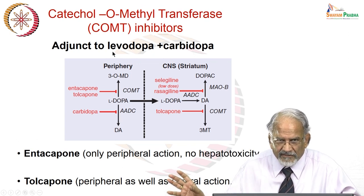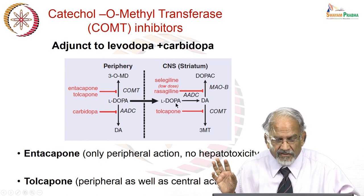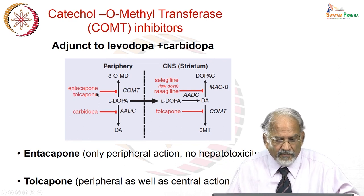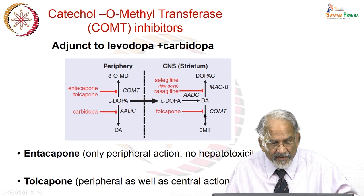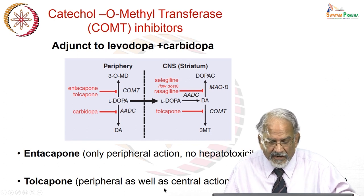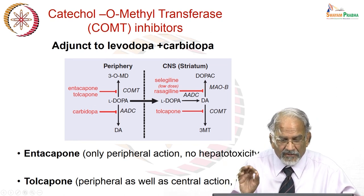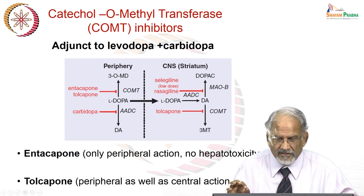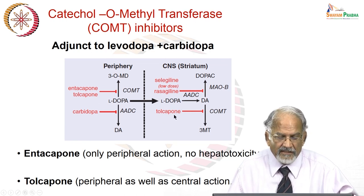Catecholamine O-methyltransferase inhibitors: entacapone inhibits COMT in the periphery, while tolcapone inhibits dopamine metabolism both in the brain and the periphery — so tolcapone has peripheral and central action and is more potent. However, tolcapone can cause hepatic toxicity, therefore entacapone is more preferred though it is less efficacious than tolcapone.